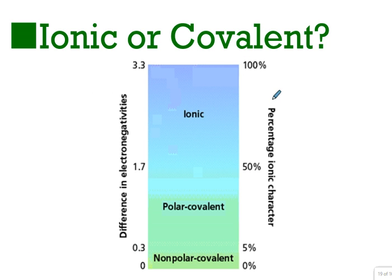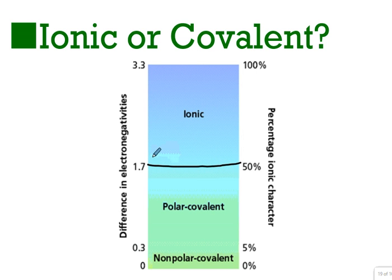A useful graphic shows percent ionic character on one axis and the difference in electronegativities on the other, illustrating a gradual transition rather than a hard line. Above a certain point, something has a high degree of ionic character and behaves like an ionic compound, probably forming ions in solution. The values will help us make determinations about what we consider the bonds to be.